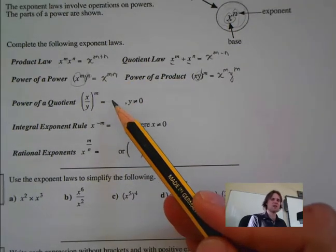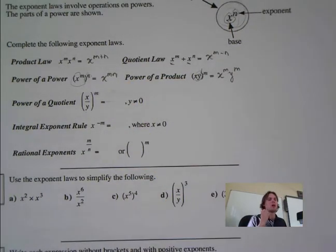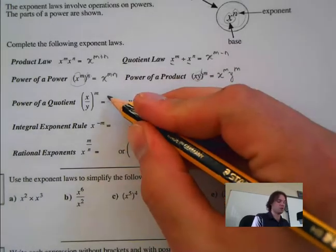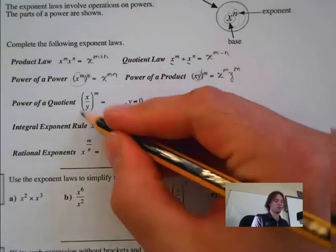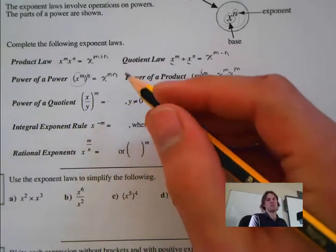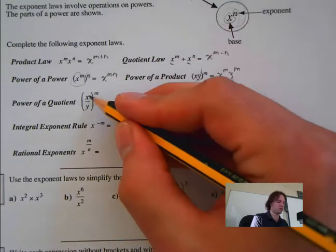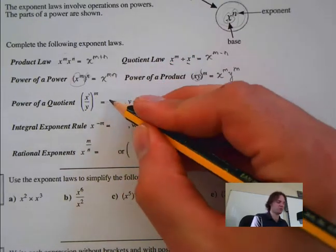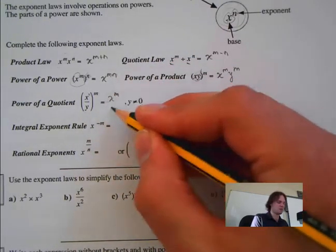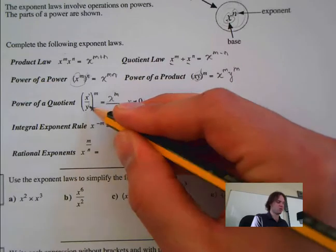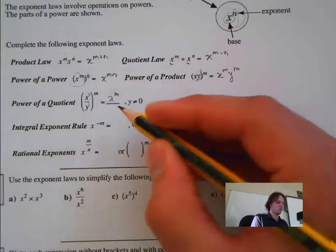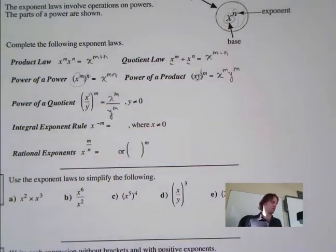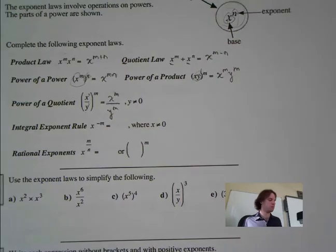Next is power of a quotient — same idea, it's distributable. There's an imaginary exponent of 1 on both the numerator and denominator. So m times 1 is m, giving x to the n over y to the n.